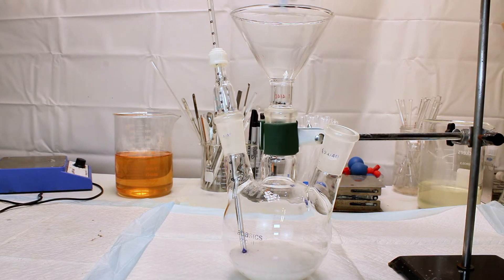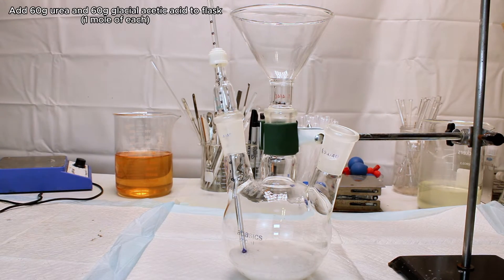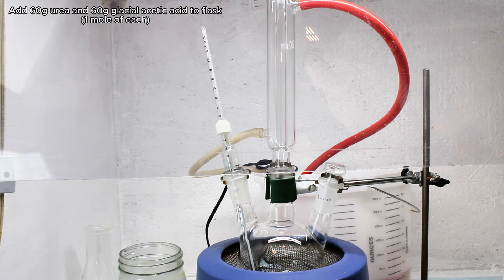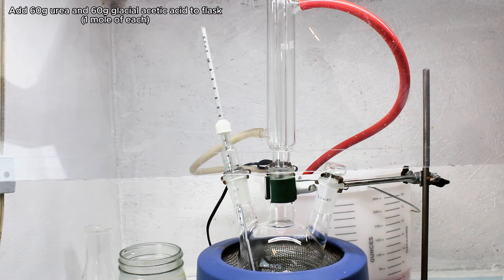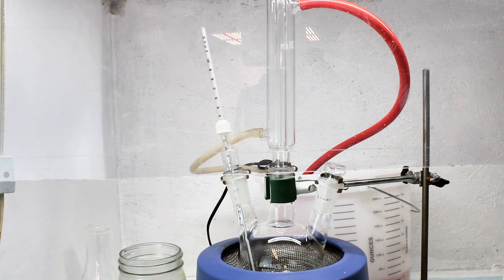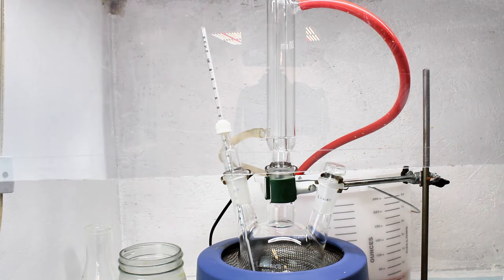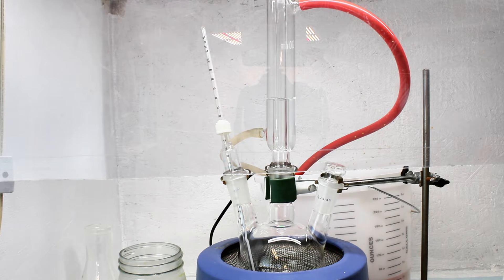To get started, I added 60 grams of urea and 60 grams of glacial acetic acid to a three-neck boiling flask, representing one mole of each. I then connected a thermometer to one of the necks and a Liebig condenser to the center neck so that it stands vertically. The third neck is sealed with a stopper and I turned up my heating mantle.